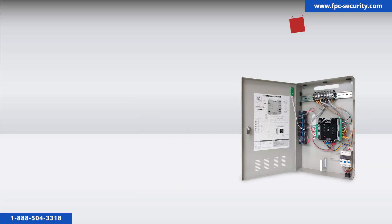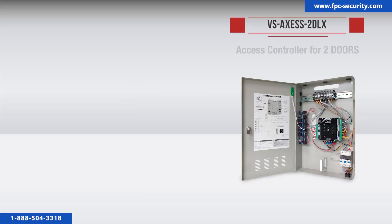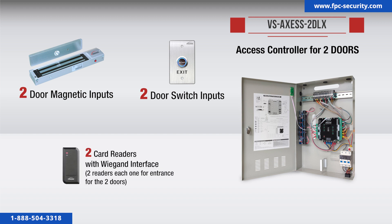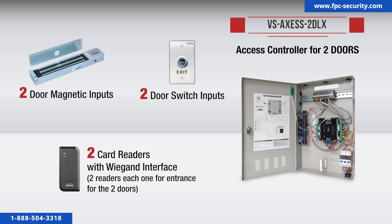The VS Access 2DLX version 2 is an access controller for two doors. This system can connect up to two door magnetic inputs, two door switch inputs, and two card readers with Wiegand interface — two readers, each one for entrance for the two doors, or one for entrance and one for exit for one door.